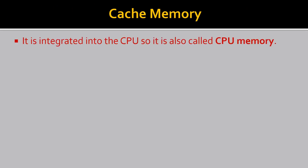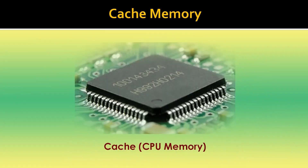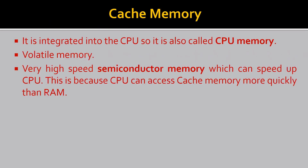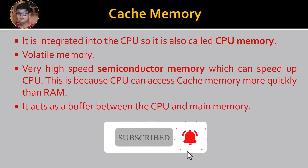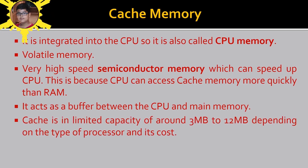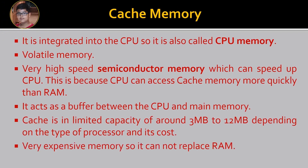Cache memory is integrated into the CPU, so it is also called CPU memory. It is volatile memory with very high speed semiconductor memory which can speed up the CPU, because the CPU can access cache memory more quickly than RAM. It acts as a buffer between the CPU and main memory, and stores data which is being repeatedly used by the CPU. Cache has a limited capacity of around 3 MB to 12 MB depending on the type of processor. Cache memory is very expensive, so we cannot use it to replace RAM.